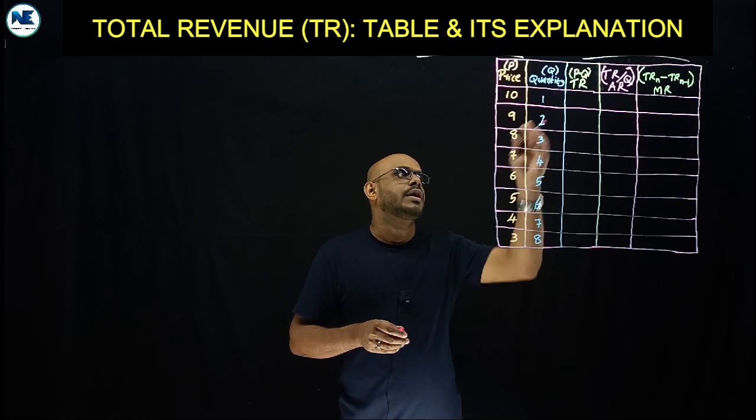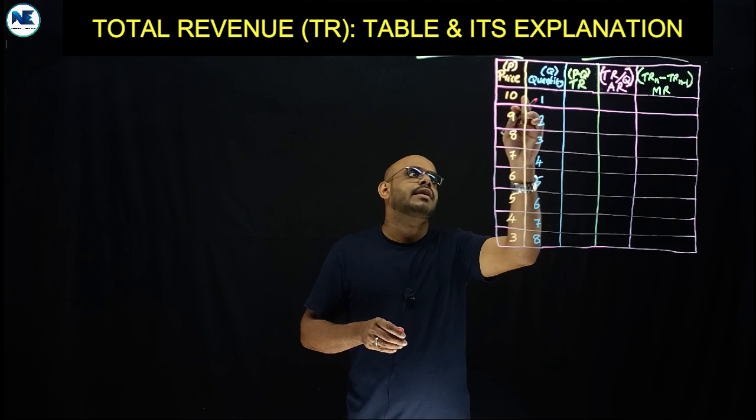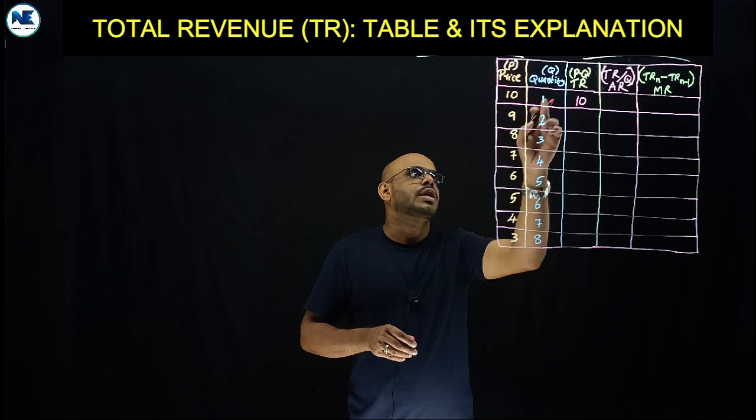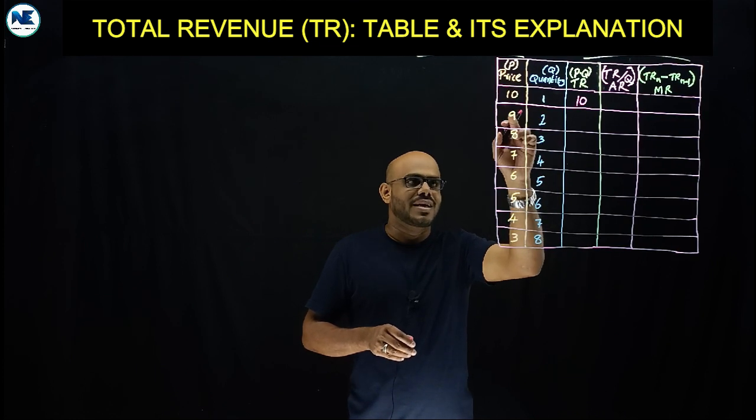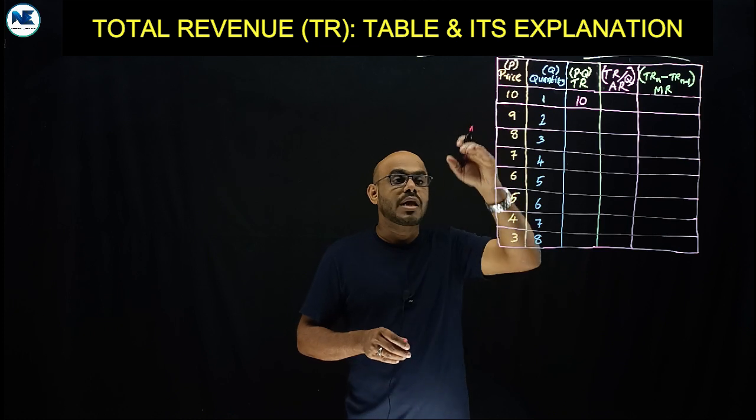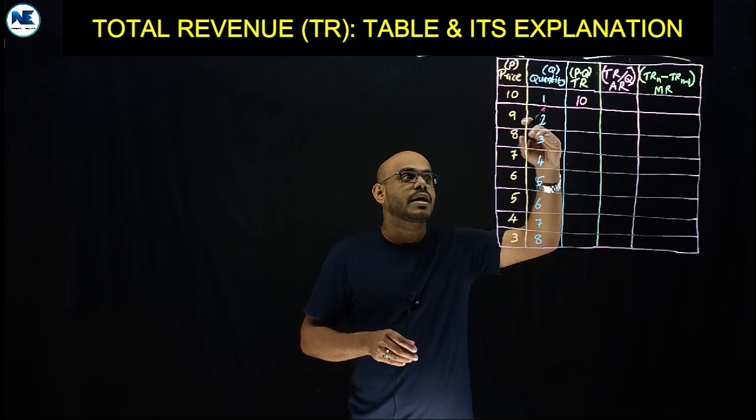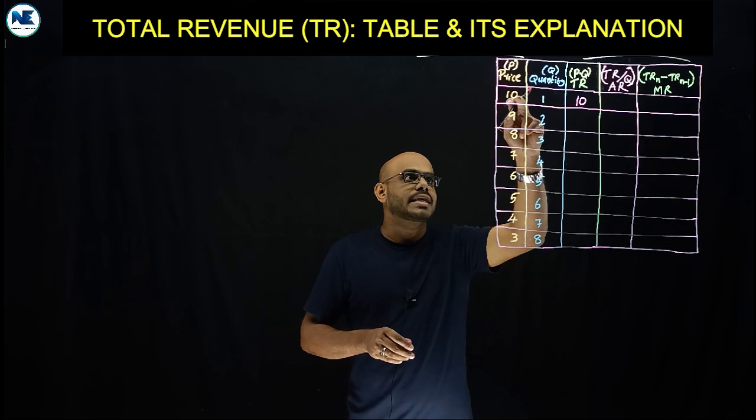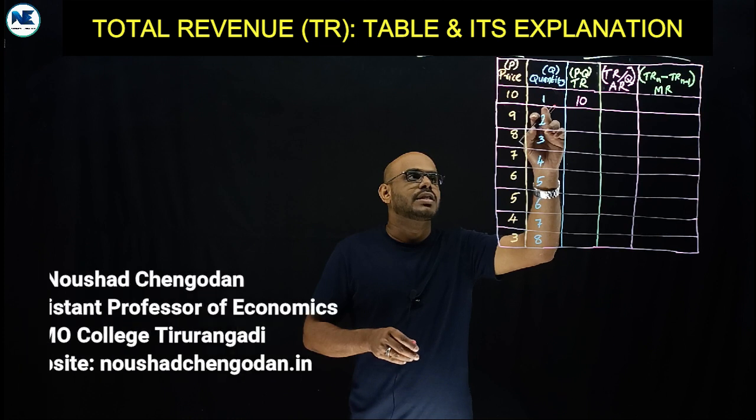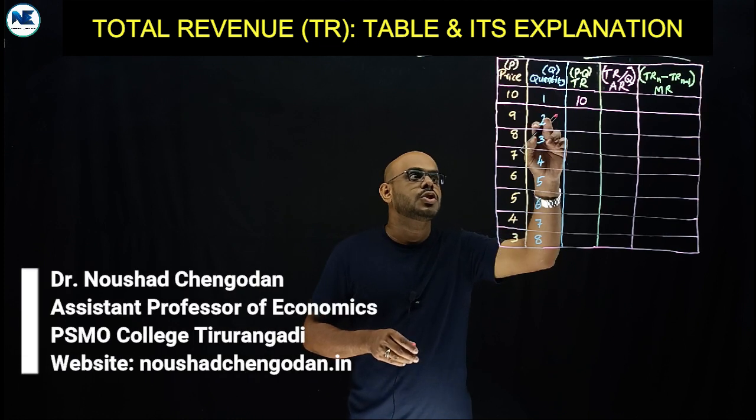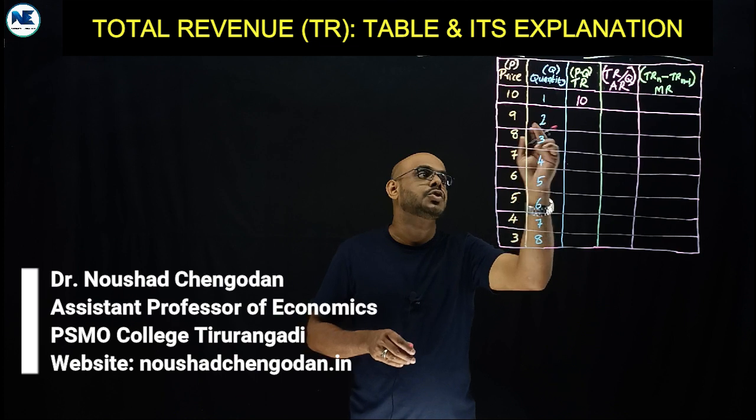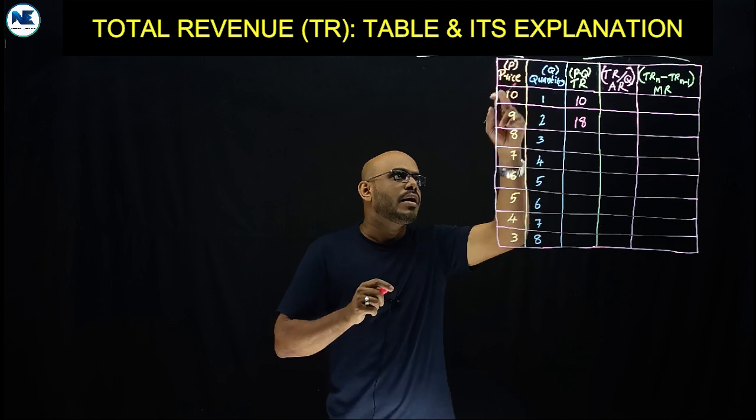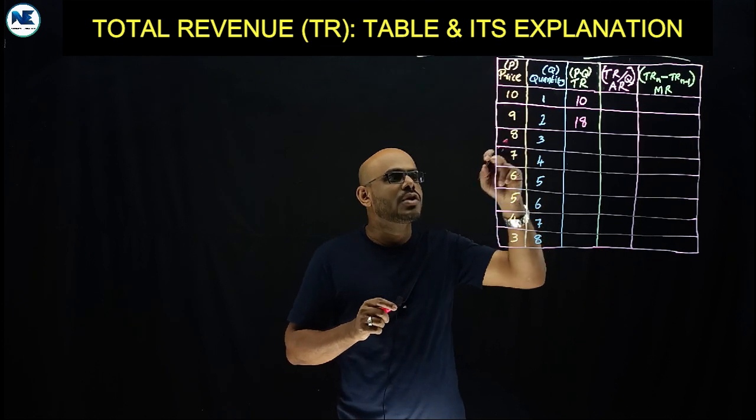Price is 10, quantity is 1, then 10 into 1, the total revenue is 10. Then price is 10. According to law of demand, when price is 10, quantity demanded or sold is 2. Price 10, quantity sold is 2, total revenue is 20.